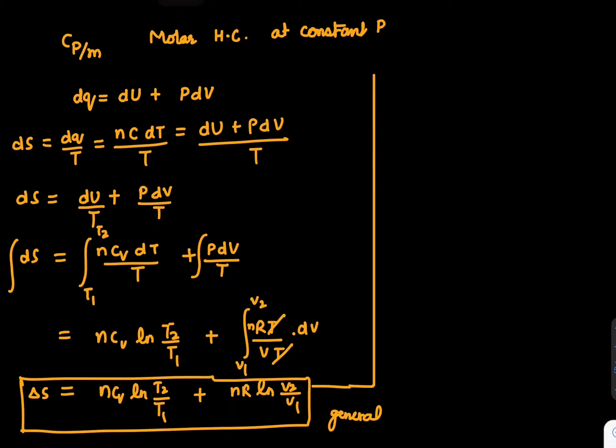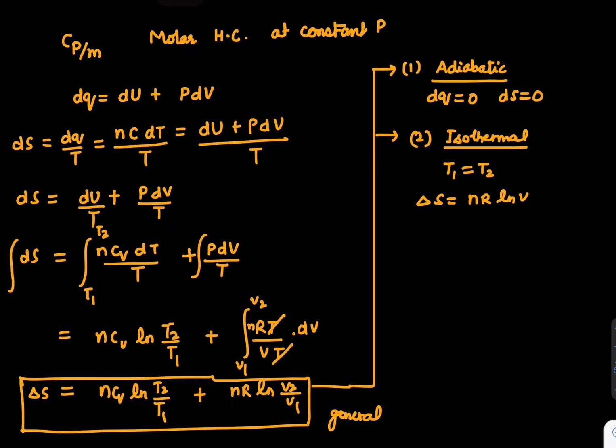Case number one: adiabatic. If it is adiabatic, dq itself is zero, so dS has to be zero. Case number two: isothermal. In the isothermal case, T1 and T2 are the same, hence ΔS = nR ln(V2/V1).